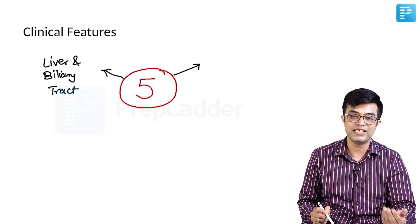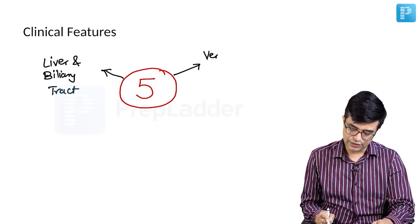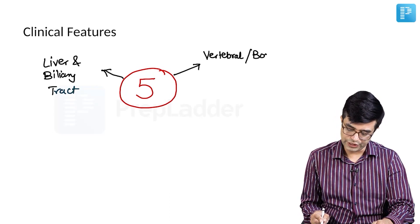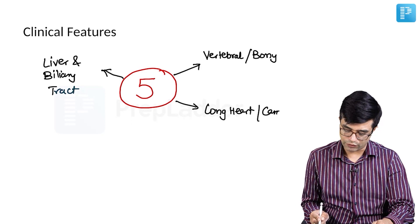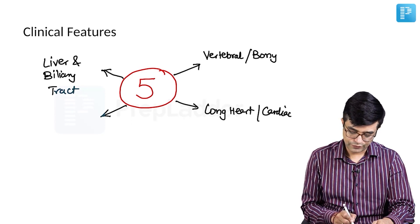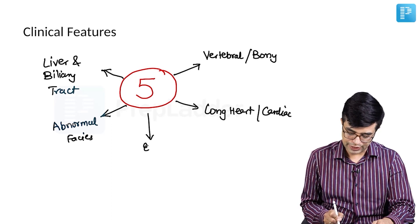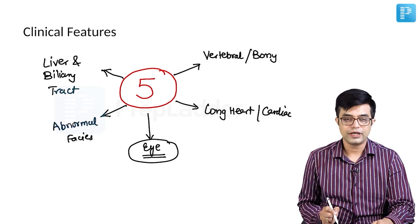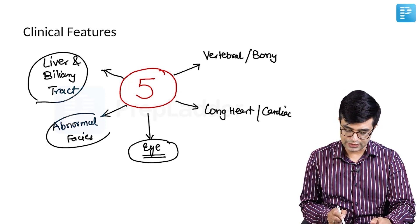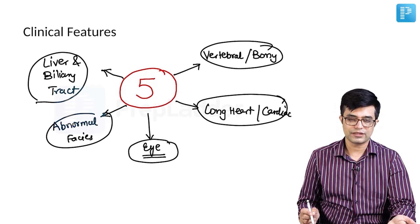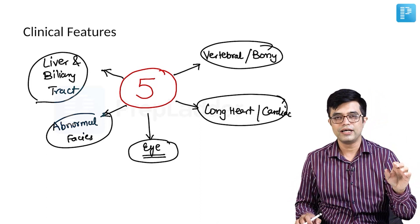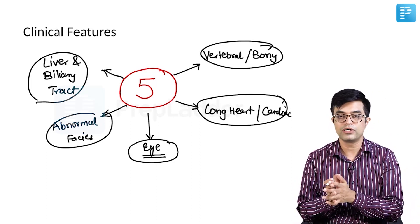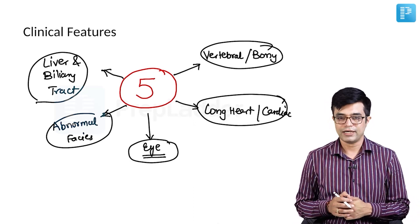The second system involved, also called a major system, is the vertebral or bony involvement. Thirdly, we have congenital heart diseases, that is cardiac involvement. Fourth, we have abnormal facies — they have a very characteristic face. And the fifth feature is eye involvement, which mainly involves anterior chamber abnormalities. These are the five major systems. The original diagnostic criteria required bile duct paucity on histology plus any three of these five systems, though that criteria is no longer strictly followed.